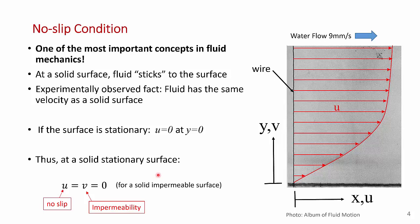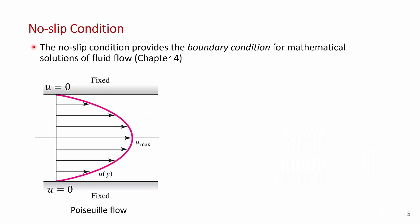These two conditions are really important from a mathematical perspective because they set the boundary condition for our differential equations at the surface. The no-slip condition provides the boundary condition for mathematical solutions to fluid flow. What's being shown here is two fixed solid walls with a pressure gradient — a pump is driving the flow. In laminar flow — I'll talk about what laminar flow is in a few moments — you get a parabolic flow profile, but at the wall the fluid sticks and you get u equals zero. This is called Poiseuille flow, after an early fluid dynamics researcher.